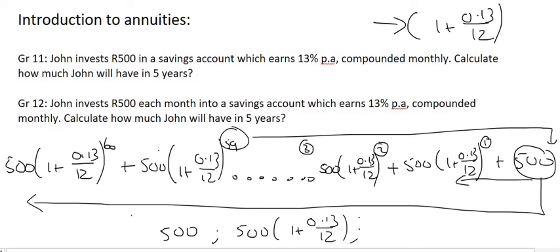And if I times that by another one of these, then I end up with 500(1 + 0.13/12) to the power of 2. So we've got a geometric pattern on our hands.